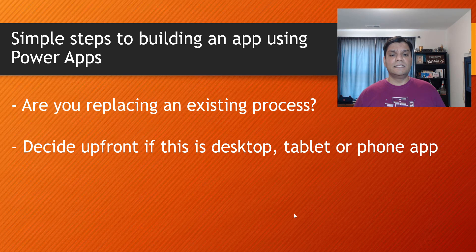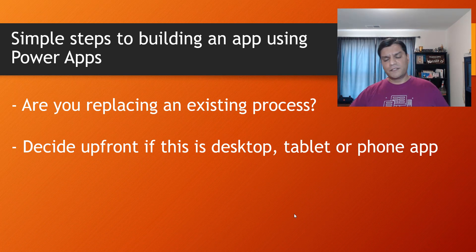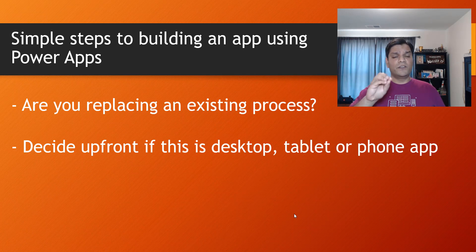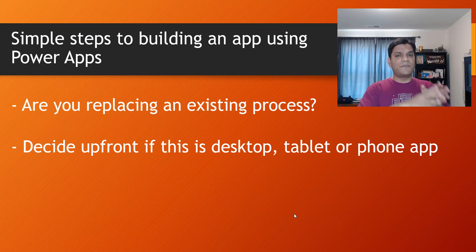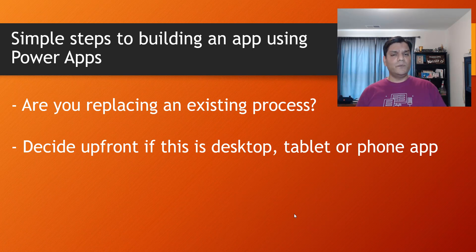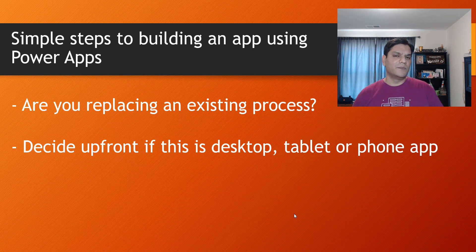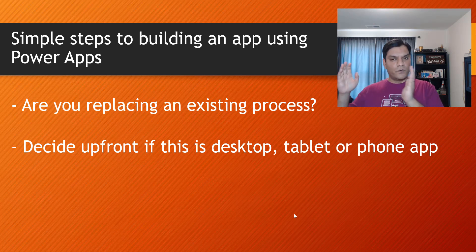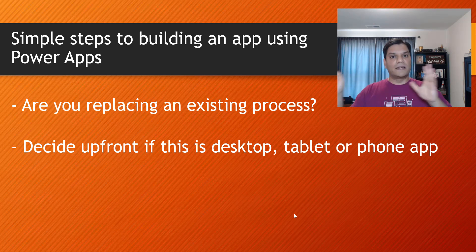The next point is to decide up front if it's going to be a desktop, tablet, or phone app. There are a lot of responsive design capabilities available, but where you'll struggle is that a tablet or desktop app cannot be used as a phone app. A tablet with a 4-by-3 screen ratio can still work on a desktop, but a 4-by-3 ratio is not going to work on an iPhone or smartphone — things are just going to get all whacked out.